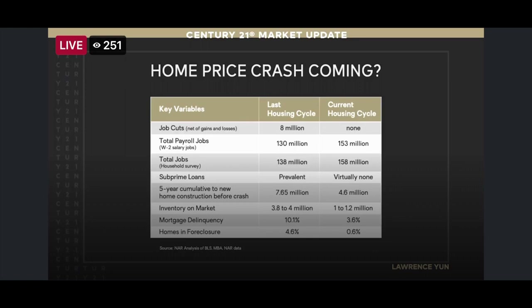Take a look at the inventory on the market toward the bottom — this is a basic supply and demand principle. You'll see that the supply is much lower. Too much supply in the last cycle caused prices to crash. Today we see much less inventory, much fewer properties on the market for sale, which means a lesser chance of a price crash. We also see much less homes in foreclosure right now — they're on the bottom line.